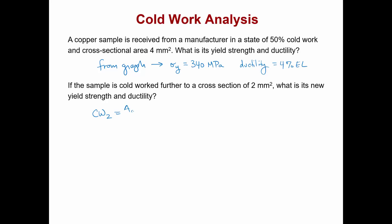Remember, cold work is just the original cross-sectional area minus the new deformed cross-sectional area over the original. In other words, the percent reduction. In this case, we could take the value 4 square millimeters minus 2 square millimeters divided by the original 4.